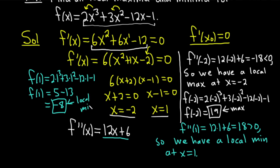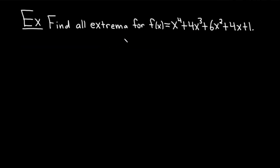In this example we had one local minimum and one local maximum. Let's go ahead and do another example where things might not be so simple. Find all extrema for f of x equals x to the fourth plus 4x cubed plus 6x squared plus 4x plus 1.